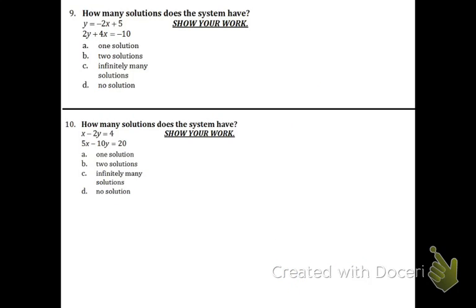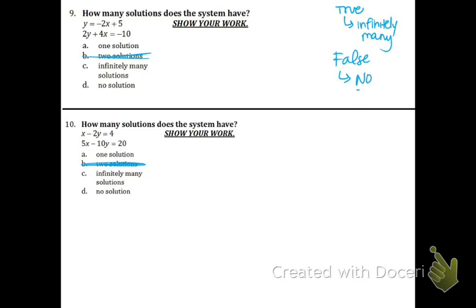How many solutions does this system have? First of all, never choose two solutions — it doesn't make sense. When the variables cancel out, one solution is also not a possibility. When the variables cancel out and you get a true statement, then it's infinitely many. And if you get a false statement, then it's no solution. That's how it works always.